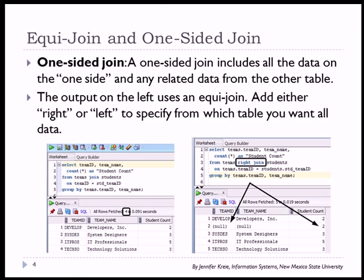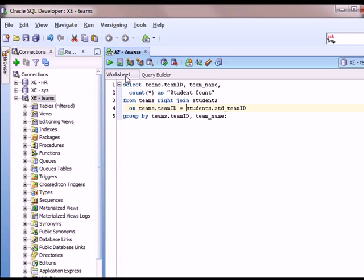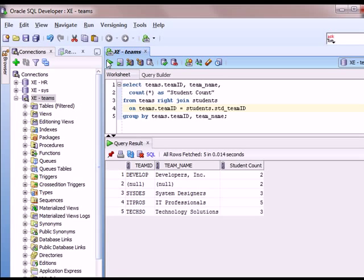So I'll switch over to SQL Developer, and I'll run this query. So we've got the right join, students, viewing all data from students, even if there's not related data in the teams table.